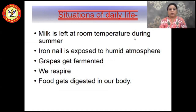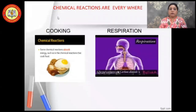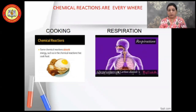Just think of these daily situations in your life: milk is left at room temperature during summer, when an iron nail is exposed to a humid atmosphere, grapes get fermented, we respire, and food gets digested in our body. These are some of the examples of chemical reactions in our daily life. Cooking of food is also a chemical reaction, and so is the process of respiration.